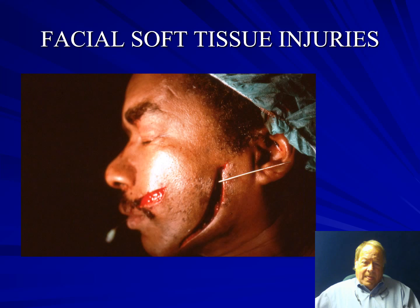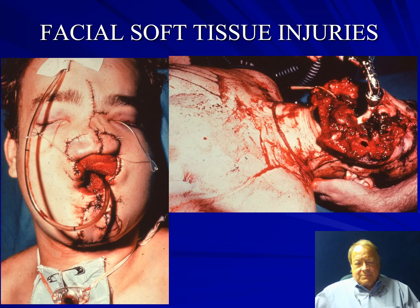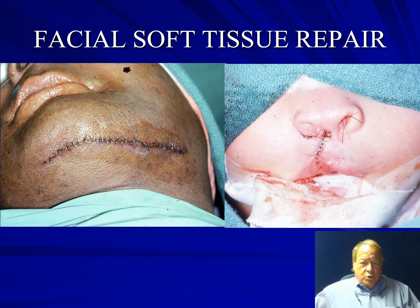Facial soft tissue injuries include major lacerations of the cheek and corner of the mouth. Significant in this injury is a parotid duct laceration, where a catheter is threaded through the distal portion of the parotid duct and then into the proximal portion for repair. Facial soft tissue injuries range from simple to complex — this before-and-after shows salvaging as much tissue as possible, with cosmetic repair done each and every time.